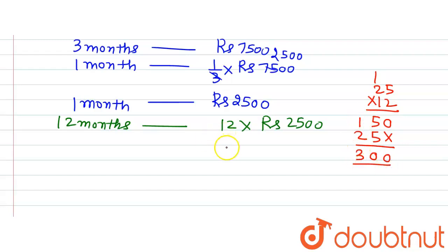So we will have our answer as 12 multiplied by 25 is giving us 300, and these two zeros will be added at the back. So we will have the rent for 1 year that is paid by Shaina is Rs. 30,000. Thank you.